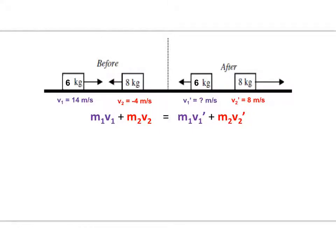So here's an example of an elastic collision. One object, the first object is traveling to the right, this one here, and so we call that a positive direction.